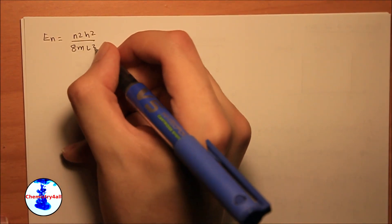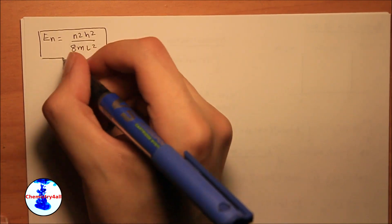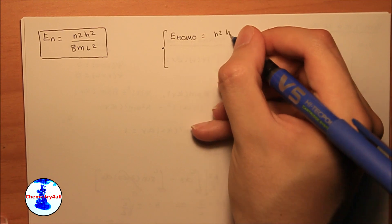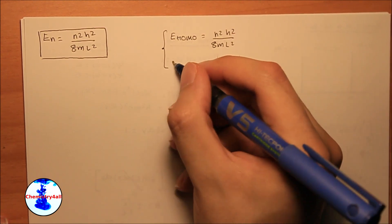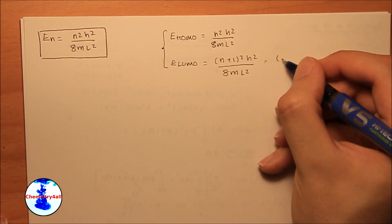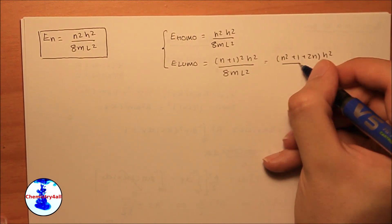Alright, now we can assume that the electronic transition within the trans-beta-carotene takes place between the HOMO and the LUMO, which are consecutive levels. And therefore we can get an expression for their energies as a function of the general equation that we have previously obtained.